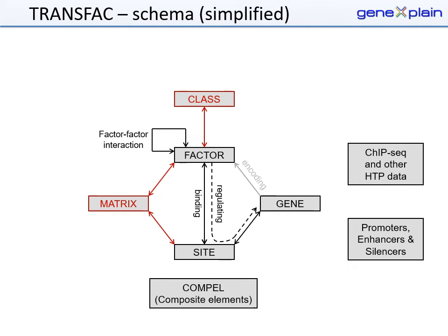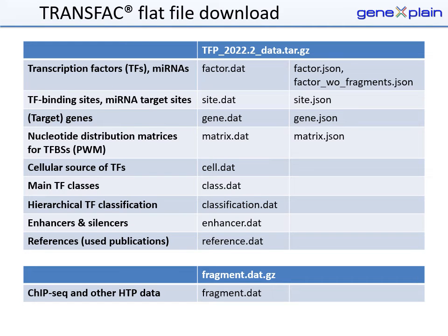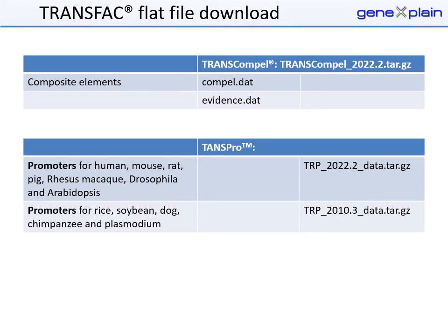This summarizes the main data files. The following slides show the data files in the archives of the TRANSFAC download. As noted, some of the data are included in DAT format as well as in JSON format. The TRANSFAC download release includes the two databases TRANSCOMPEL on composite elements and TRANSPRO with promoter regions for a number of organisms.